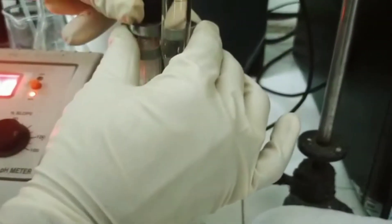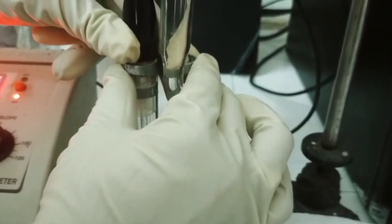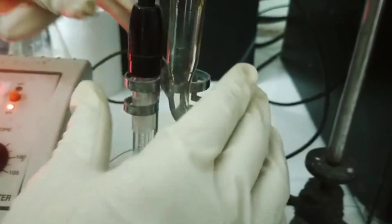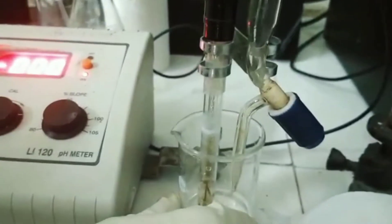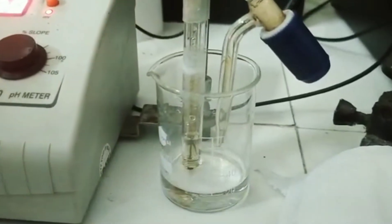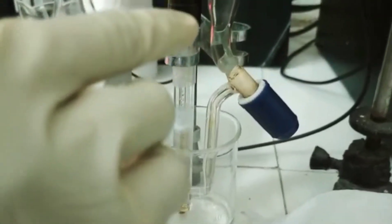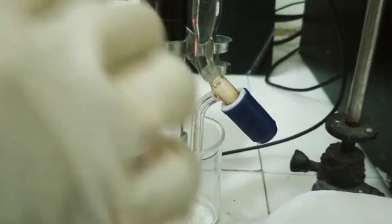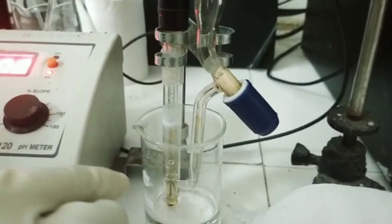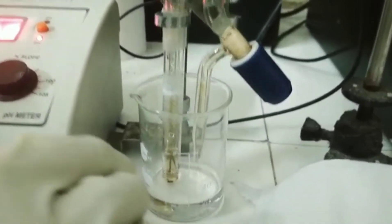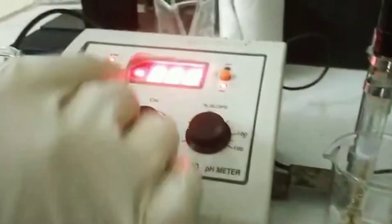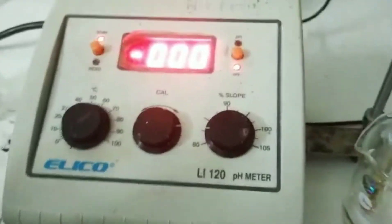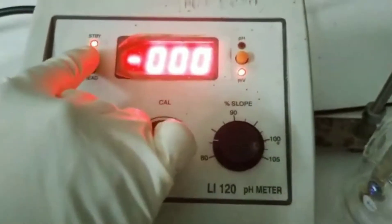So I am going to titrate the hydrochloric acid with sodium hydroxide solution by continuously adding this titrant 0.5 ml at a time and then stirring with a glass rod. And we will be observing the change in the potential. So I am going into the read mode.